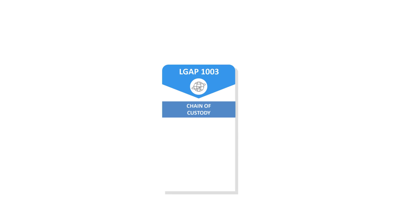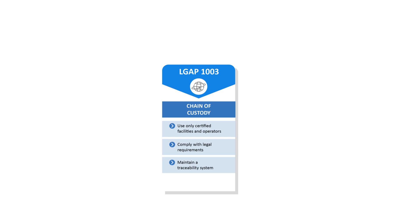LGAP 1003, the Chain of Custody standard, requires operators to confirm certification of supply chain partners, meet legal requirements, trace animals and plan for contingencies.